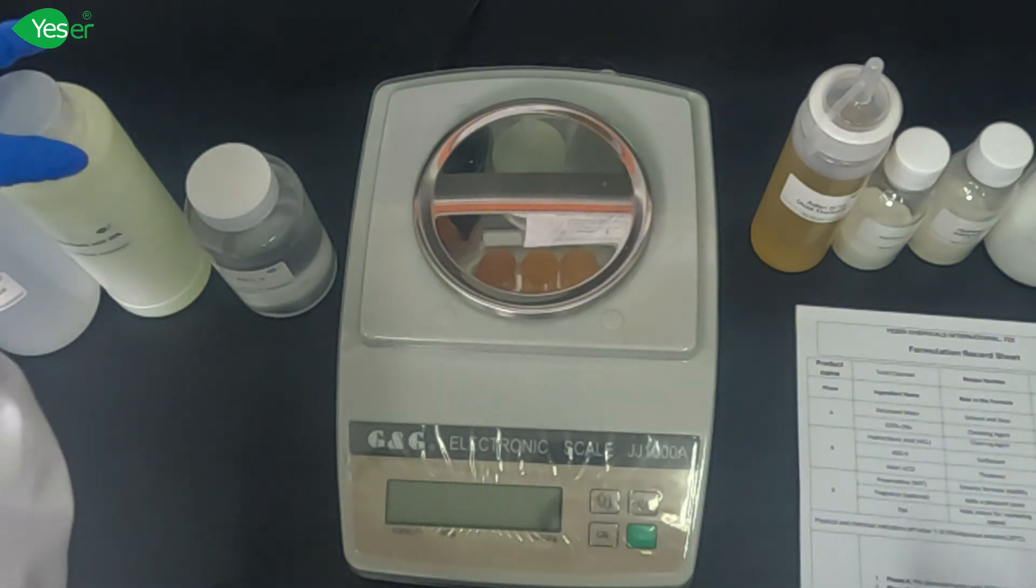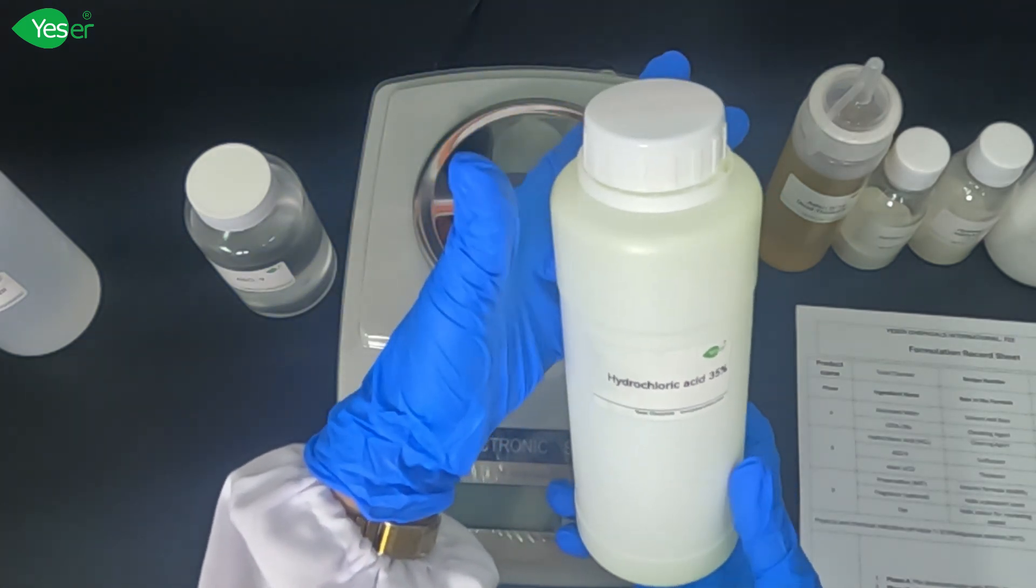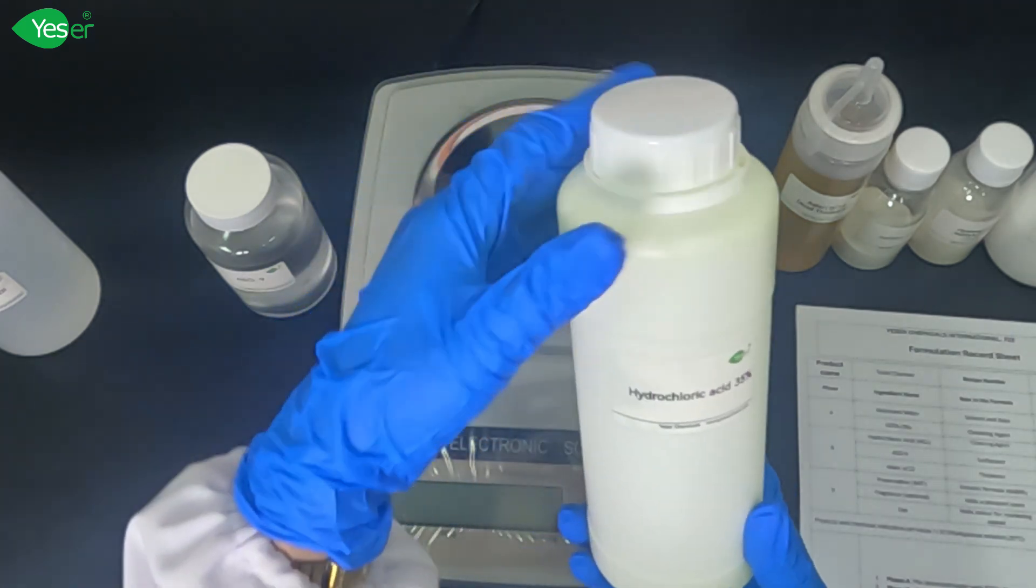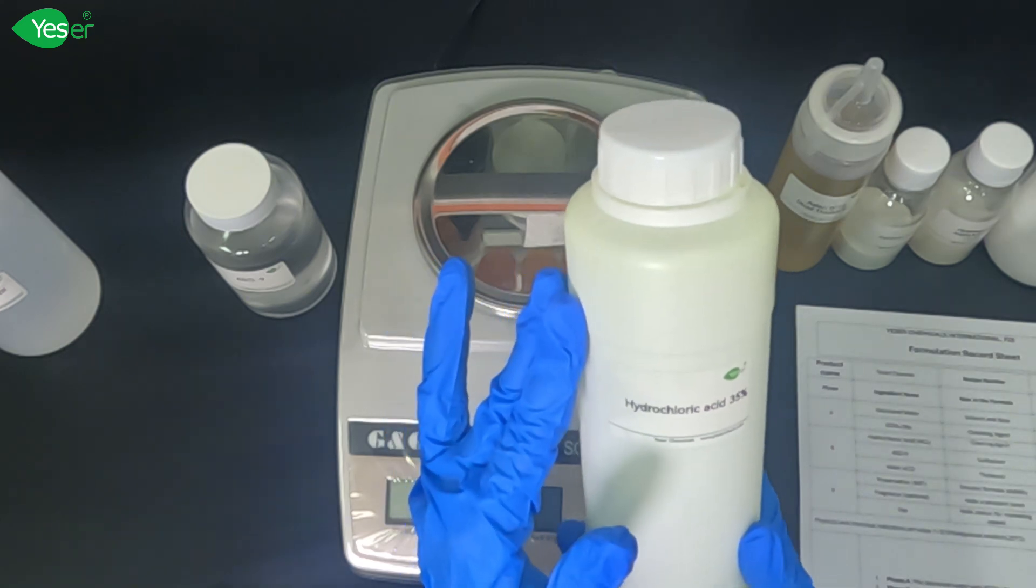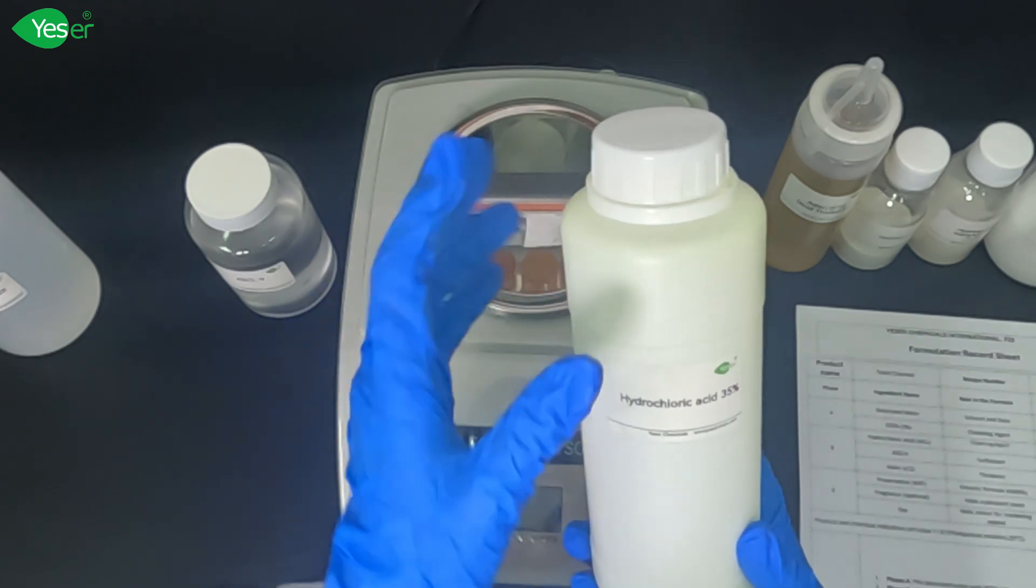Next is our hydrochloric acid, which is 35%. This is the powerhouse acid that dissolves mineral stains like limescale and rust. This is our active ingredient in the formula.